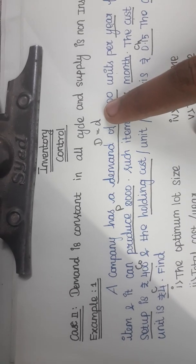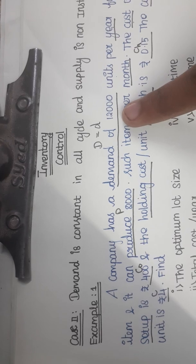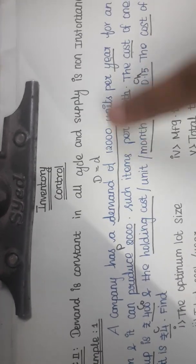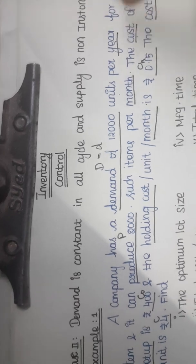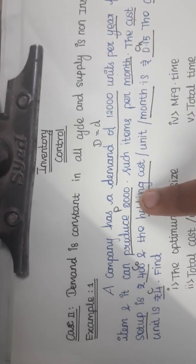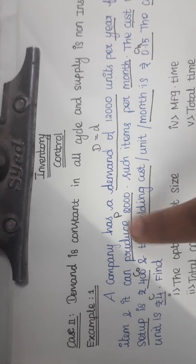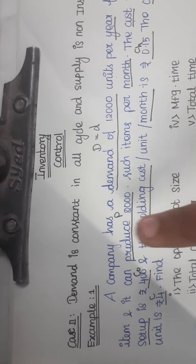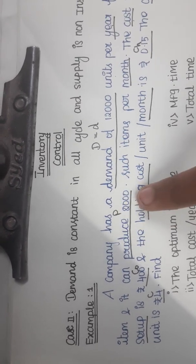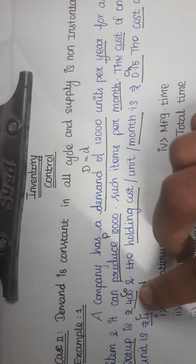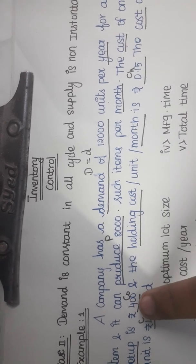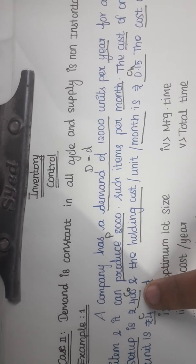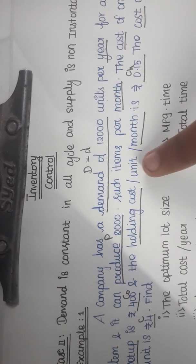The demand is capital D — the value is 12,000 per year. The production rate P is equal to 2,000 such items per month. The cost of one setup — that is the ordering cost C-not — the value is Rs 400. The holding cost per unit per month is Rs 0.15.